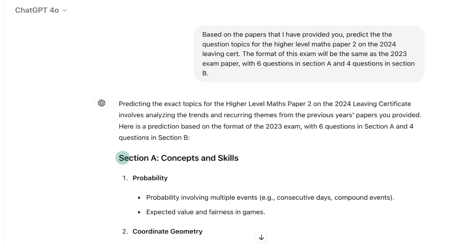Section A Concepts and Skills will contain six questions. Question 1 Probability: Expect questions involving multiple events, such as consecutive days or compound events. Be ready to calculate expected values and assess the fairness of various games.